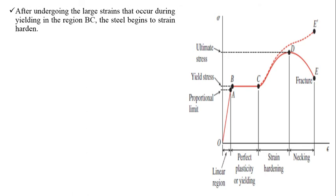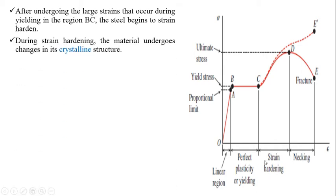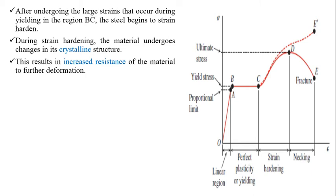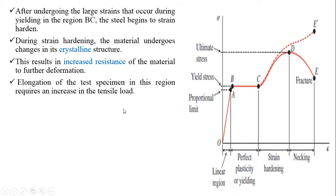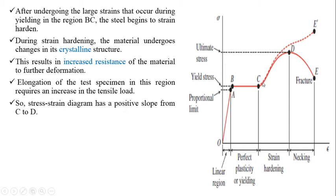After undergoing the large strains that occur during yielding in region B to C, the steel begins to strain harden. During strain hardening, the material undergoes changes in its crystalline structure, resulting in increased resistance to further deformation. Elongation of the test specimen in this region requires an increase in tensile load, so the stress-strain diagram has a positive slope from C to D — the load-carrying capacity goes on increasing due to the increased resistance from crystalline structure changes.